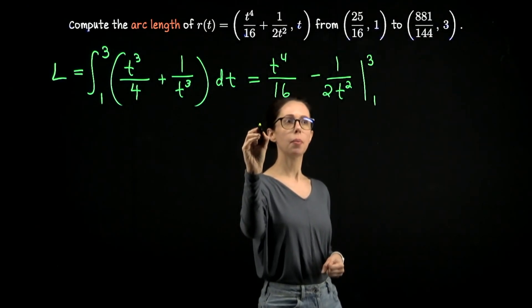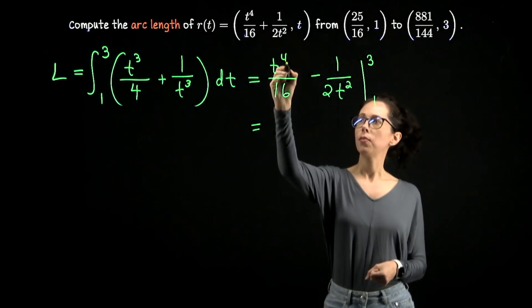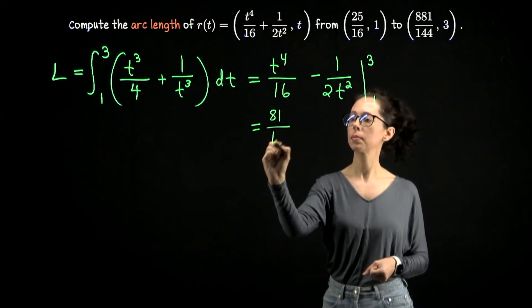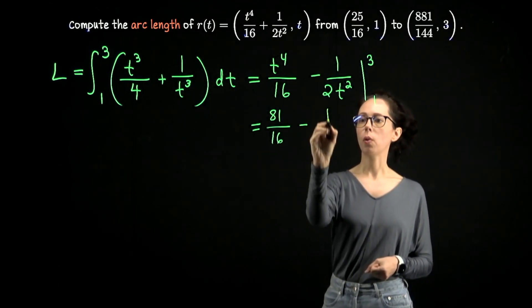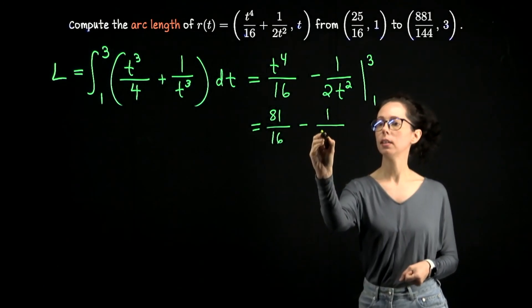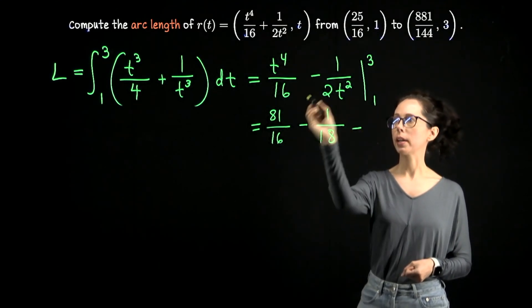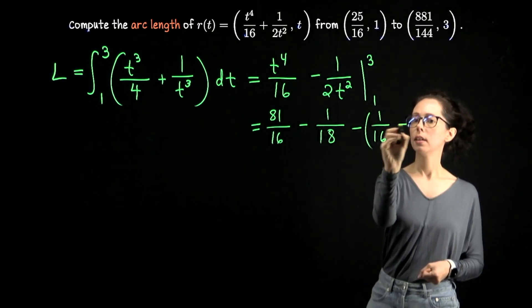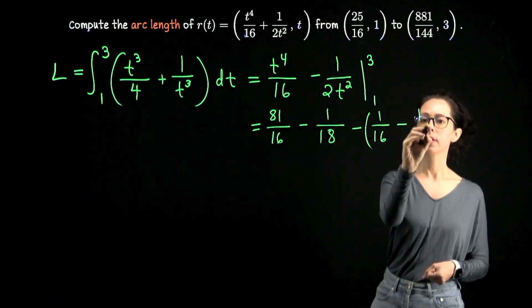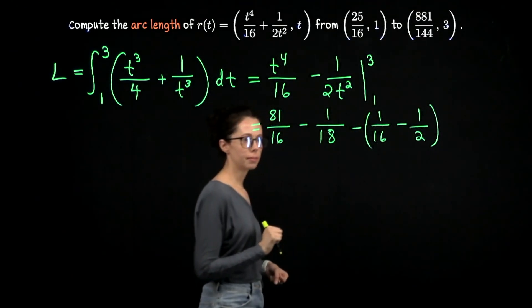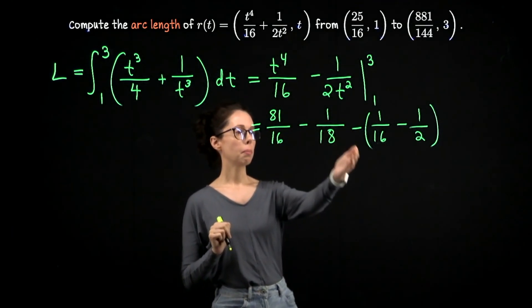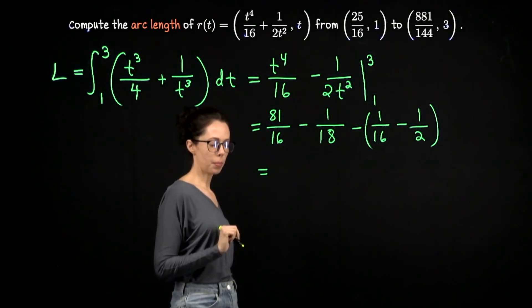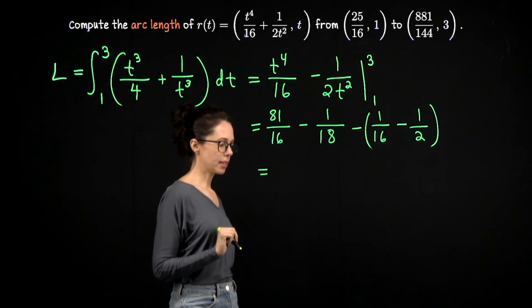So let's plug in top and bottom bounds. Three to the fourth is like three squared squared. So nine squared is 81, 81 over 16. And then minus one over two times nine, which is 18. Then minus plug in one and we get one sixteenth. And then minus one half. 81 minus one over 16 is 80 over 16. Divide top and bottom by eight. And that's 10 over two.